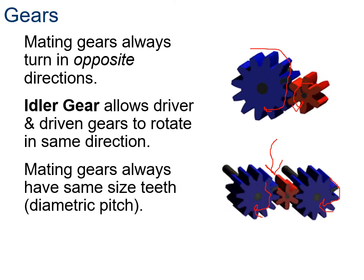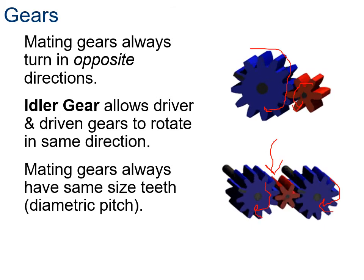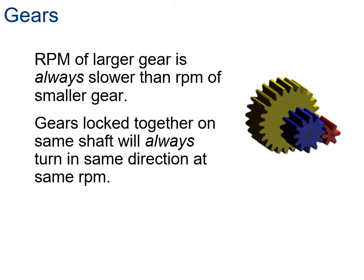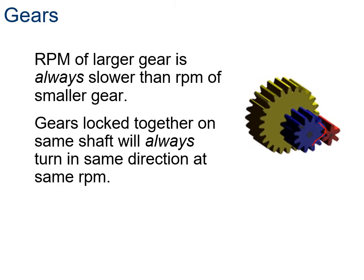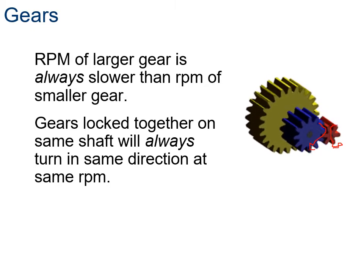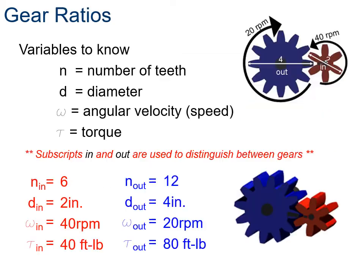Mating gears always have to have the same size teeth - what we call the diametric pitch. The RPMs of the biggest gear are always slower than for a smaller gear. The blue gear is spinning much slower than the red one because it has more teeth. Gears locked together on the same shaft will always go in the same direction and at the same number of rotations per minute.